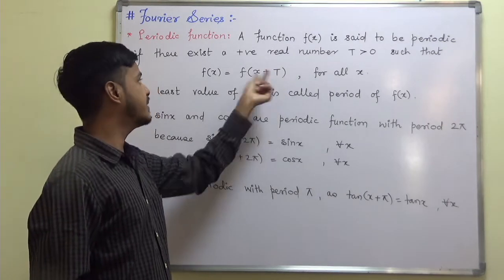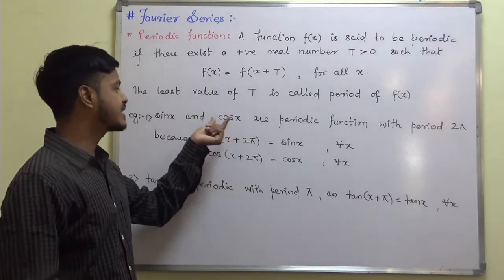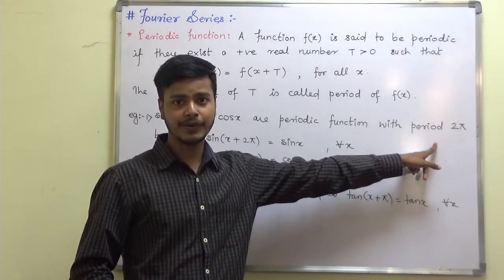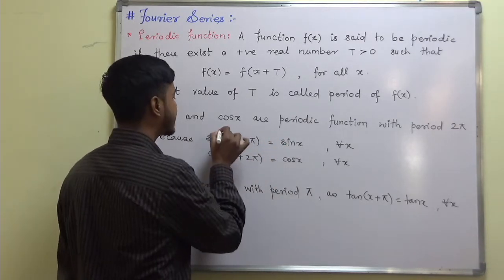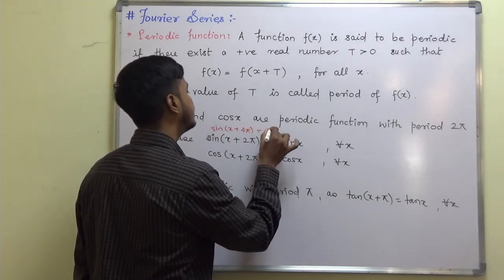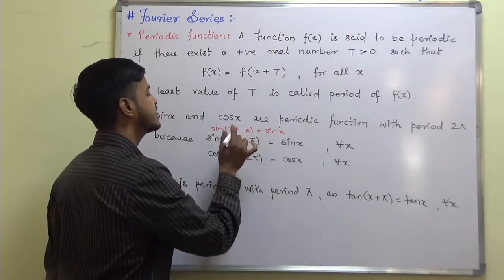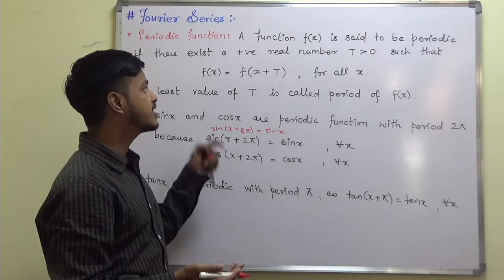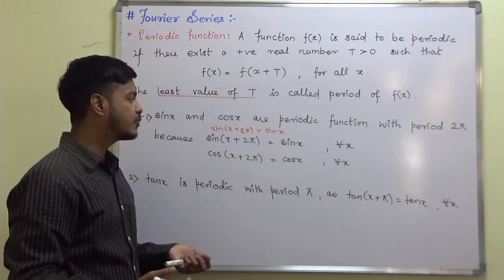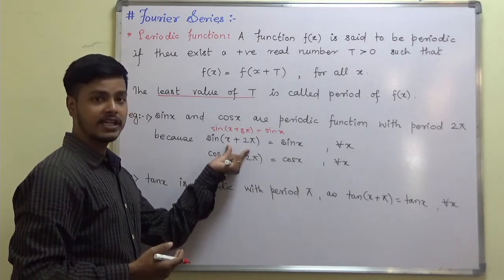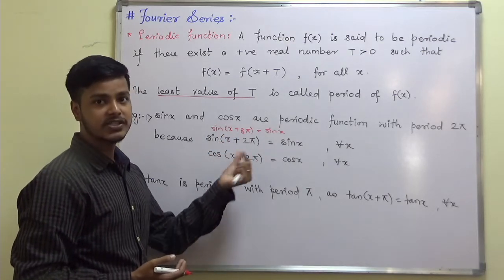The least value of this T is called the period of the function f(x). The basic examples everyone knows: sine and cosine functions are periodic functions with period 2π. So sine(x + 2π) = sin x, sine(x + 4π) = sin x, sine(x + 6π) = sin x, and so on. But the definition says the least value of T, so the least value is 2π. After equal intervals of 2π the function repeats, that's why the sine function is a periodic function with period 2π, and same is for cosine.